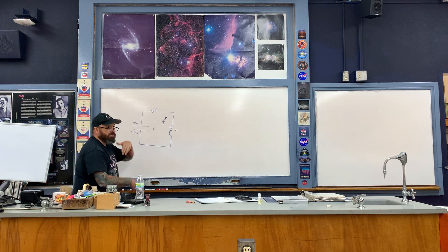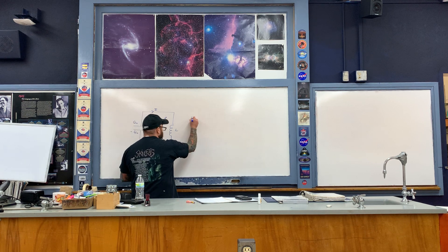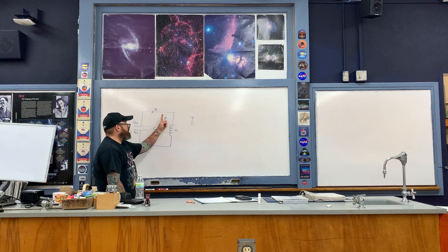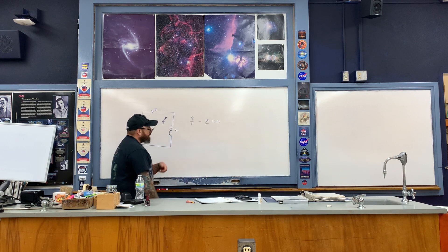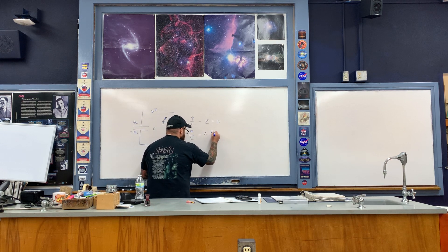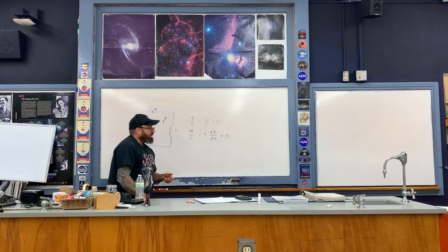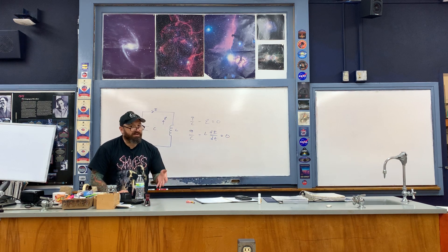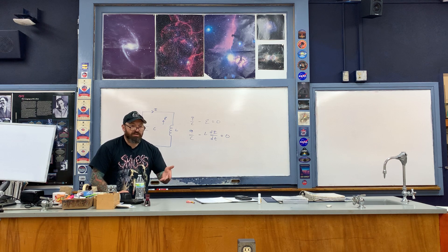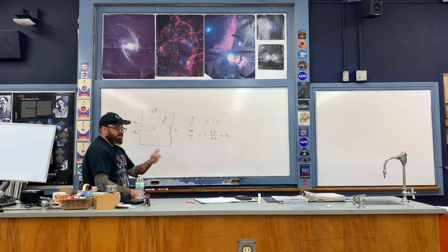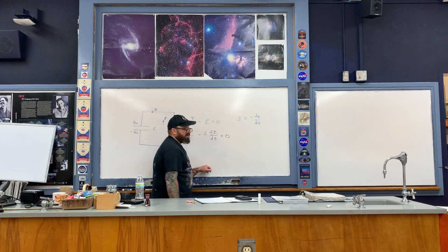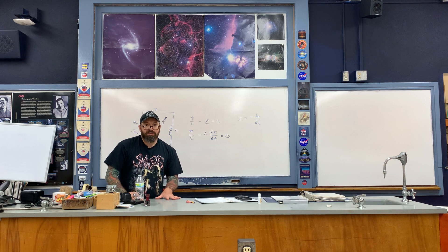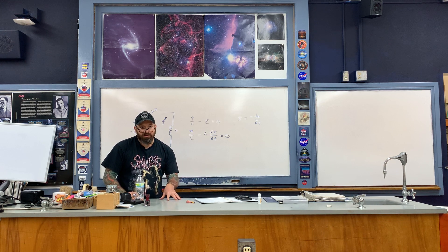Going around the loop, we first have the voltage across the capacitor, Q/C, from chapter 24. Then we go against the counter-EMF, so we subtract ε, which we replace with L·(di/dt). Current is change in charge with respect to time, but since the charge on the capacitor is decreasing as a function of time, we replace I with -dq/dt.